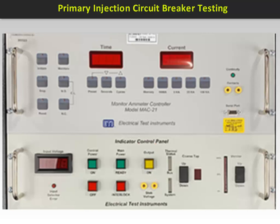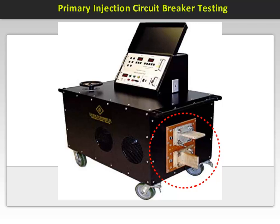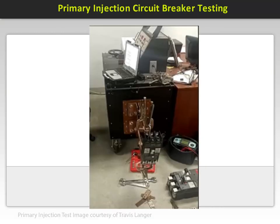Output power on light is right here. The output transformer supplies the bus on the test set, which can be set at 208, 240, and 480 volts, and is capable of generating currents up to 6000 amps. The output power is available on the bus stabs located on the side of the test set. It is important to note that the test cables need to be sized for the proper current of the device being tested. This image shows a multi-case breaker connected during a test. The set can also be used on insulated case breakers and low voltage power breakers.